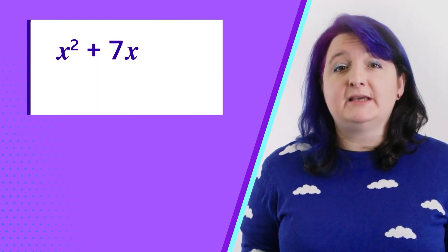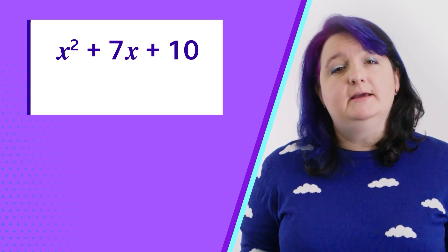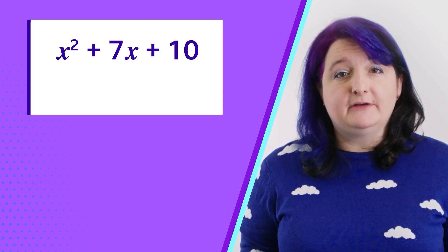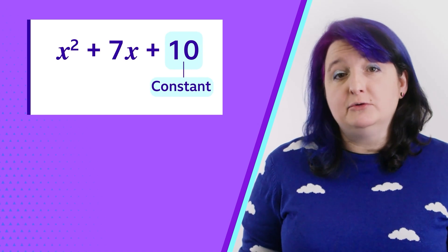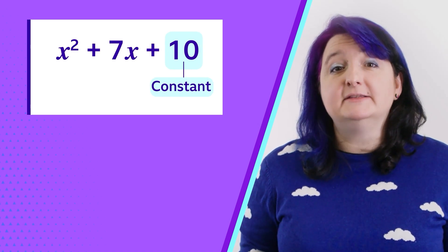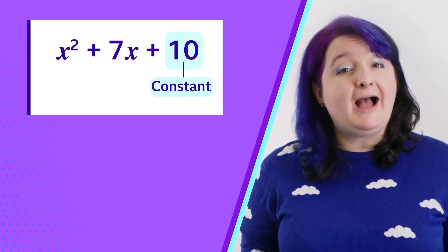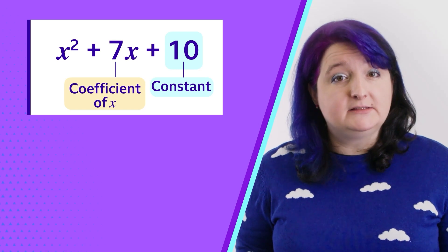For example, take the expression x squared plus 7x plus 10. The correct way to find the bracket values is to find two factors of the constant 10, so two numbers which multiply together to give 10, that also add up to the coefficient of x, which is 7.